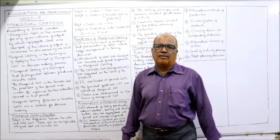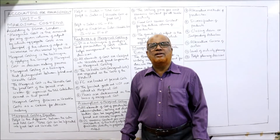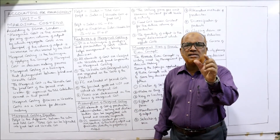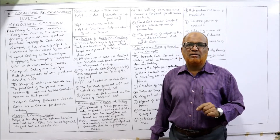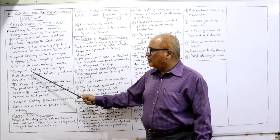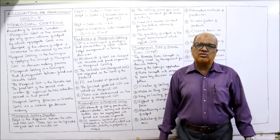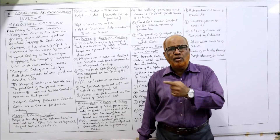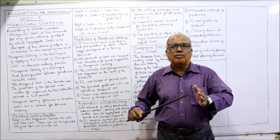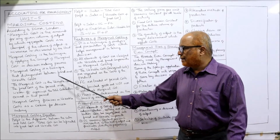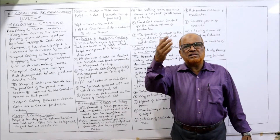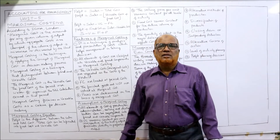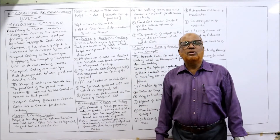Management's main function is to take decisions, and decisions can be taken with the help of information. Management uses the concept of marginal cost in decision making — that is called marginal costing. Marginal costing is a technique that distinguishes between fixed cost and variable cost. The first requirement of applying marginal costing is that total cost must be bifurcated into fixed cost and variable cost. Marginal cost is essentially variable cost, because when you increase output by one unit, fixed cost does not change.